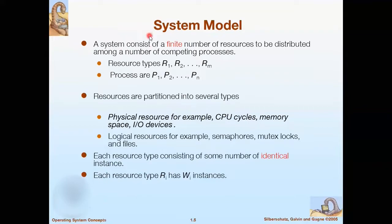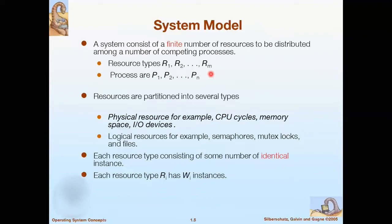Now I will discuss the system model. A system consists of a finite number of resources to be distributed among a number of competing processes. Resources are represented by R1, R2 up to Rm, and processes are represented by P1, P2 up to Pn. These processes must require these resources to complete their tasks, and these resources are not unlimited. If we had unlimited resources we would not face any deadlock. As the resources are limited, the system needs to follow a model.